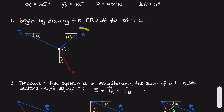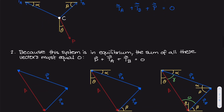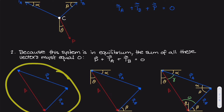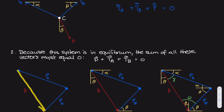Now that we've drawn the free body diagram, we need to do some trigonometry. Since this system is in equilibrium, if we add the force vectors TA plus TB plus P, we get zero — the resultant is zero. If you take all the vectors and add them in a tail-to-tip fashion, you notice they create a closed loop. Taking P, then adding tension of B, then adding tension of A, you can see it closes where P started from.